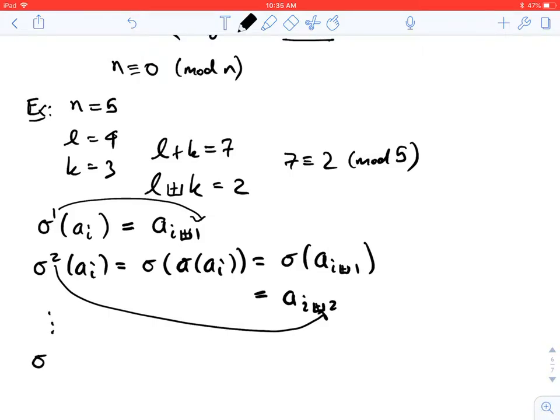Sigma to the n applied to a_i will be a_{i box plus n}. But here's the beauty. When I do box plus n, and now what does that mean? I'm going to reduce modulo n, that n goes away. All right, modulo n, right, we set up here, n is congruent to 0. So this is actually just a sub i again.